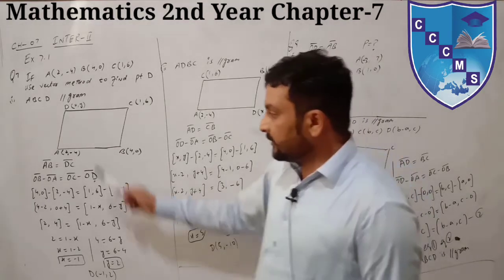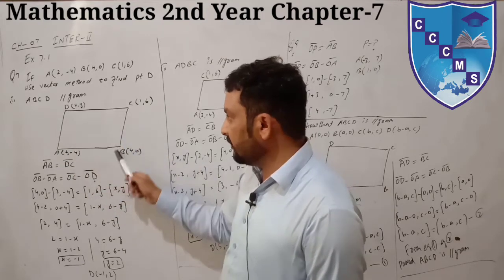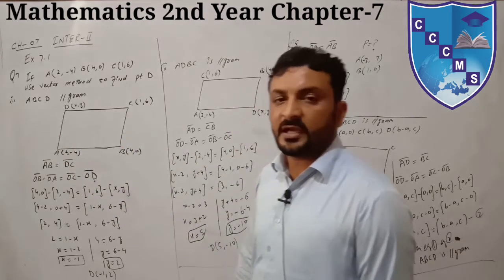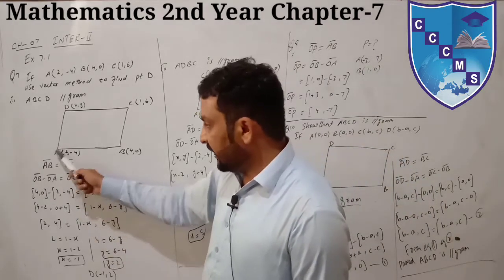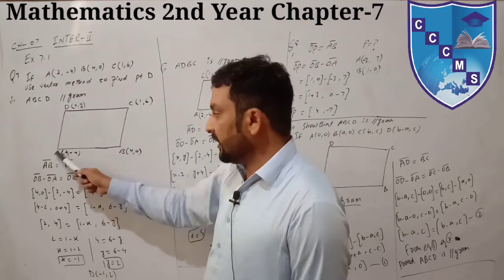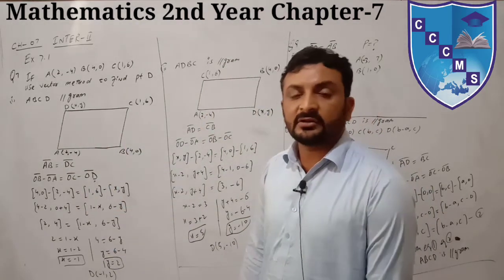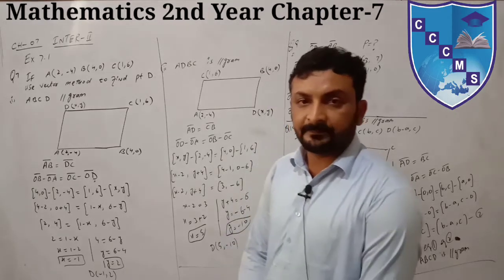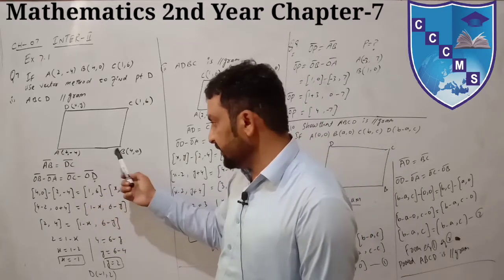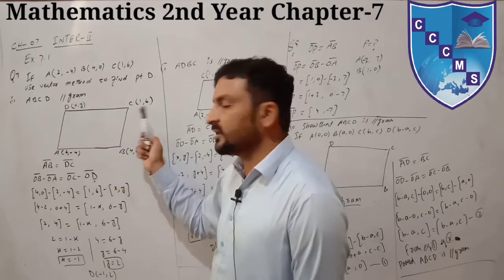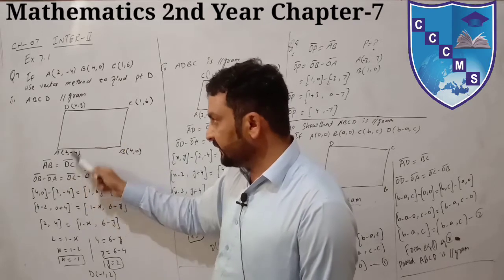In a parallelogram, opposite sides are equal: AB equals DC, and AD equals BC. The distance formula is correct but the vector method shown is wrong. For the vector method, to go from A to B and D to C, use AB equal to DC - both sides together. Use formula OB minus OA equals OC minus OD.